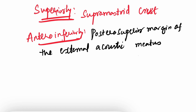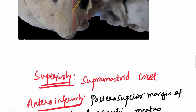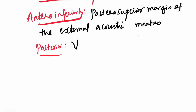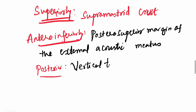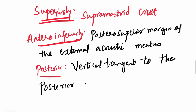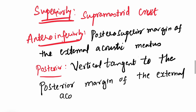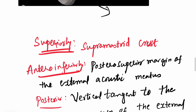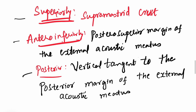Then finally, the posterior margin. It is formed by a vertical tangent to the posterior margin of the external acoustic meatus — you can see this red color line. So this vertical tangent line connects to the posterior margin of the external acoustic meatus. These are the three boundaries of the Suprameatal triangle, also known as McEwen's triangle.